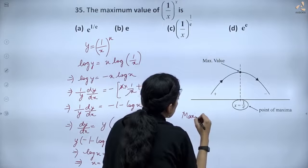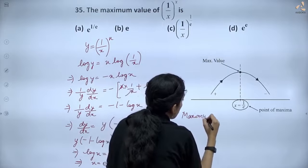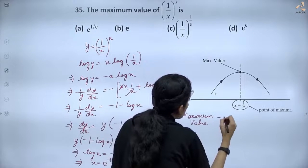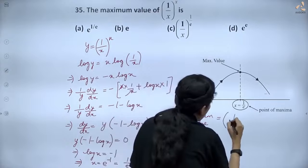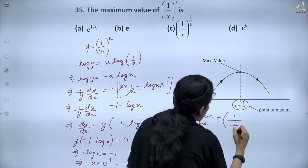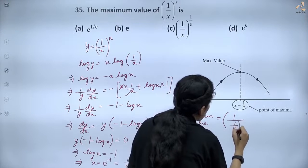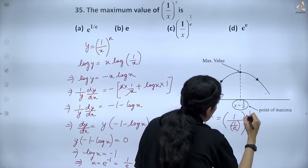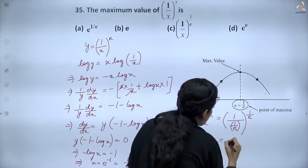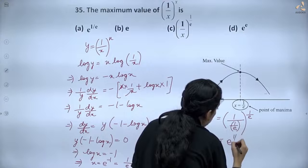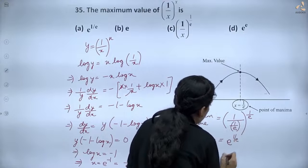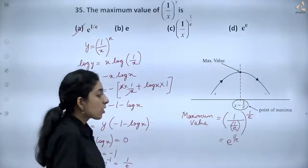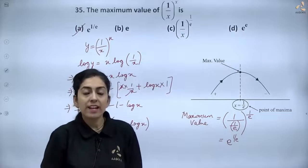The maximum value is y = (1/e)^(1/e) = e^(1/e). So the correct option is e^(1/e). Thank you.